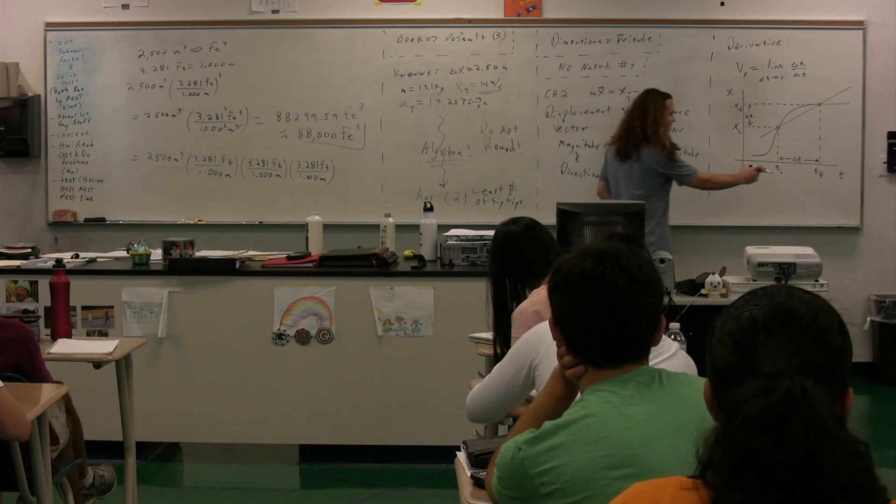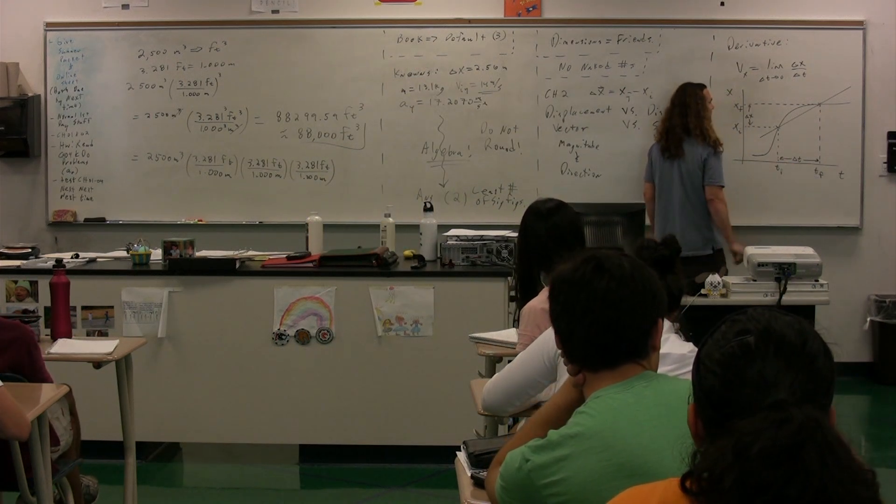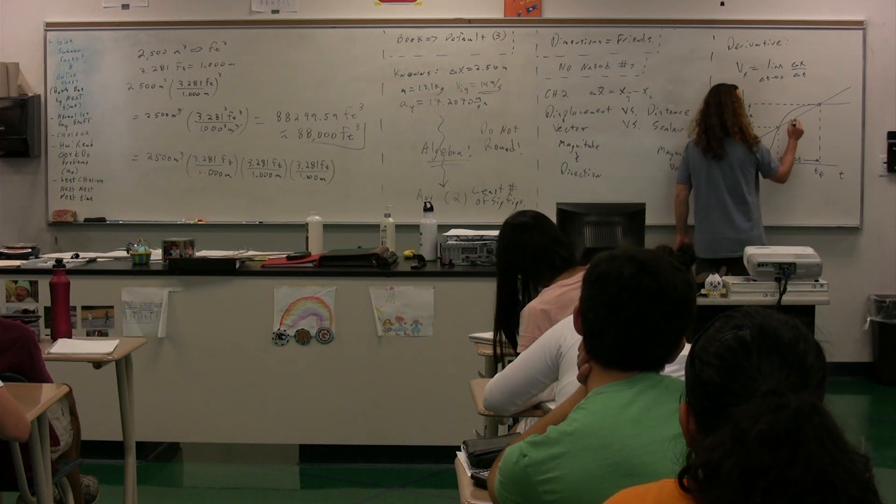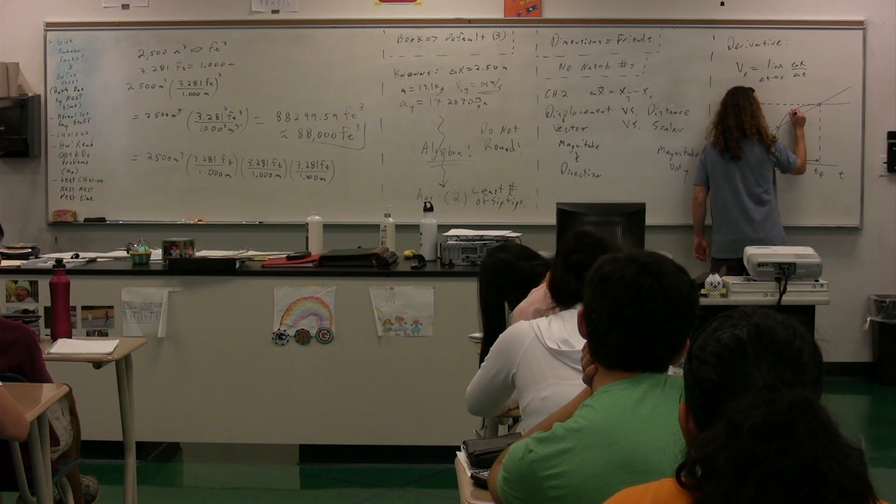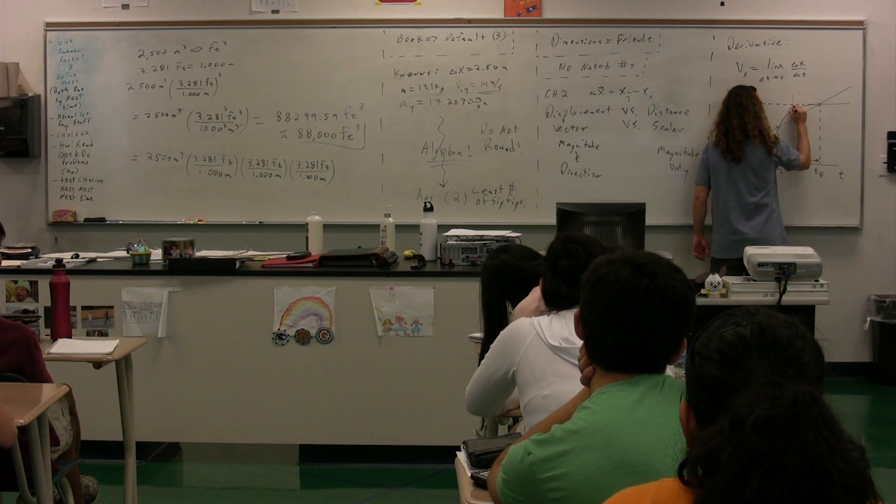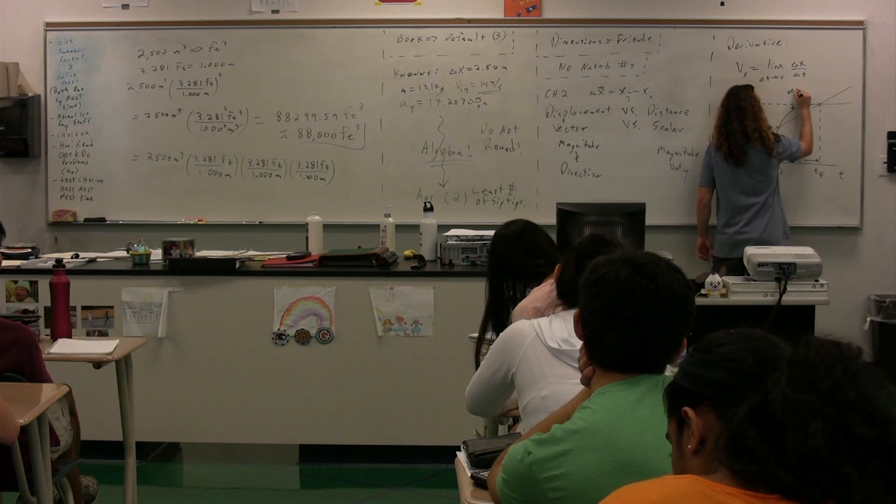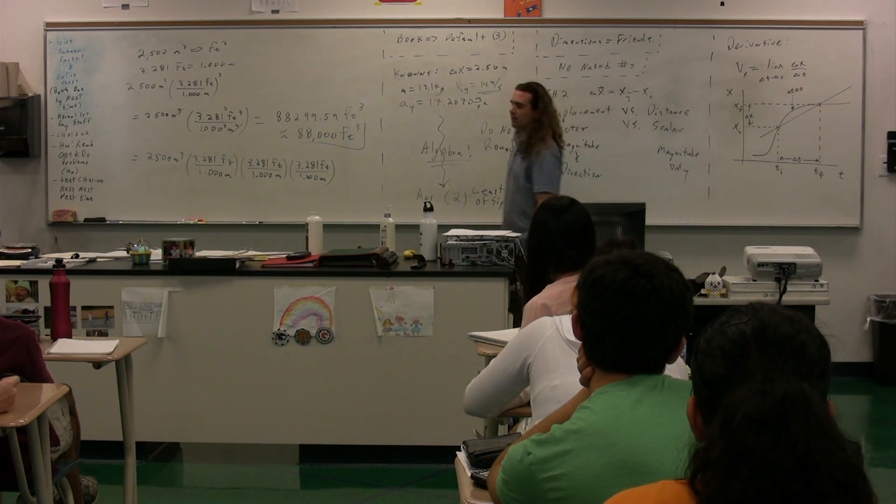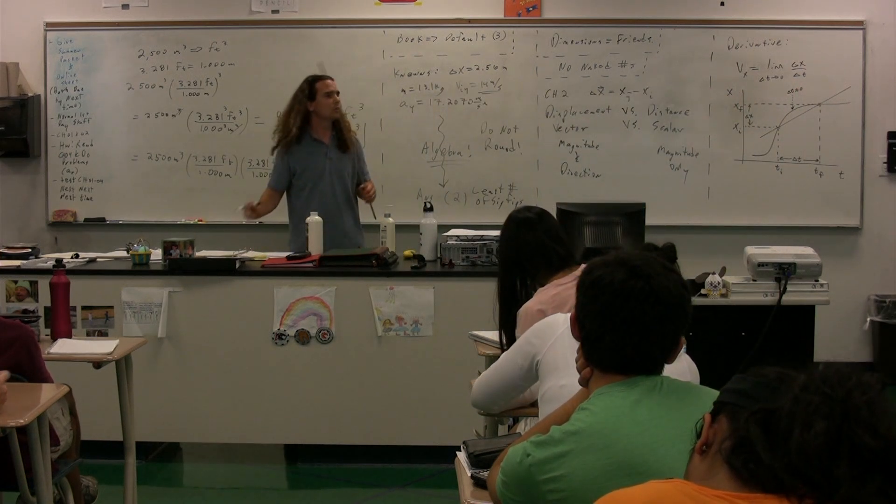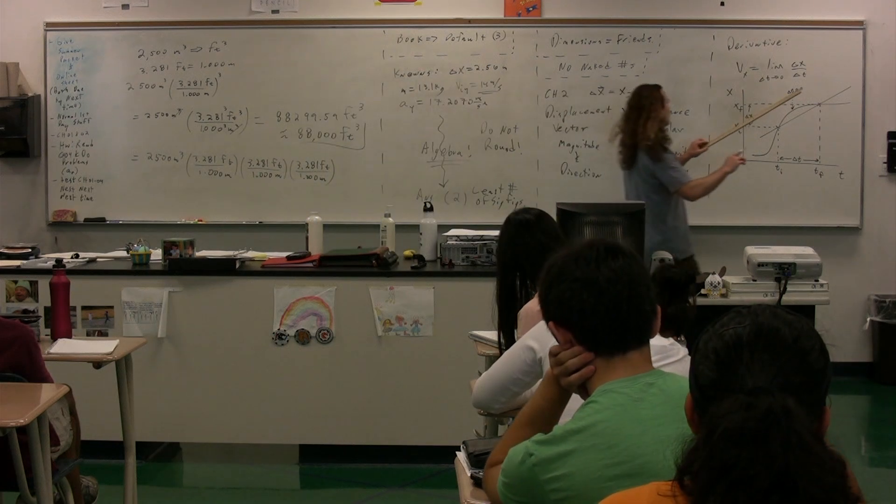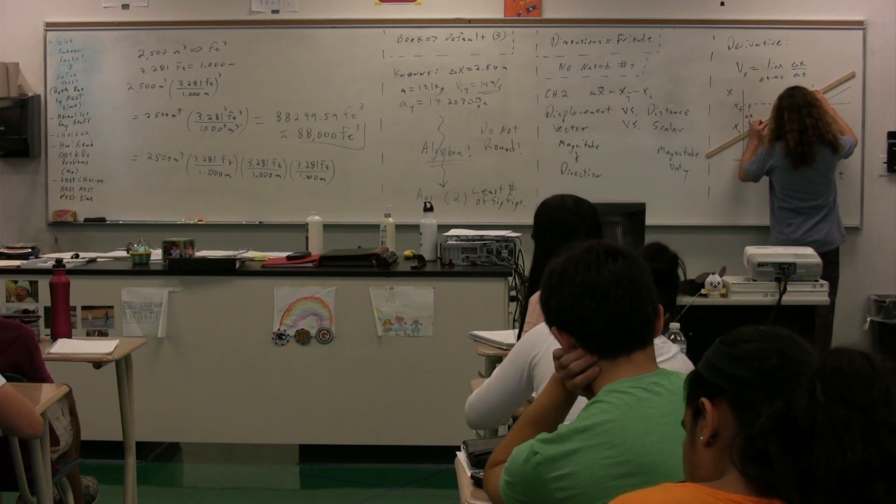So, this time gets smaller and smaller until we get to the point where, if we bring both close together, we can talk about right here, where, at this point, delta t is very, very small, very, very close to zero. And what you get, then, is this line.